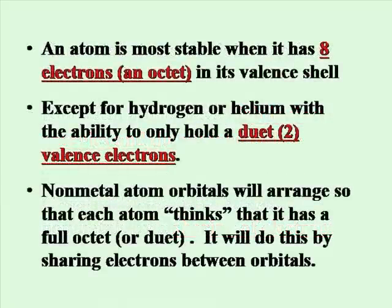An atom is most stable when it has eight electrons or an octet in its valence shell. Except for hydrogen or helium, these only have the ability to hold a duet or two electrons. Nonmetal atom orbitals will arrange so that each atom thinks it has a full octet or duet, and it will do this by sharing electrons between orbitals forming a bond.